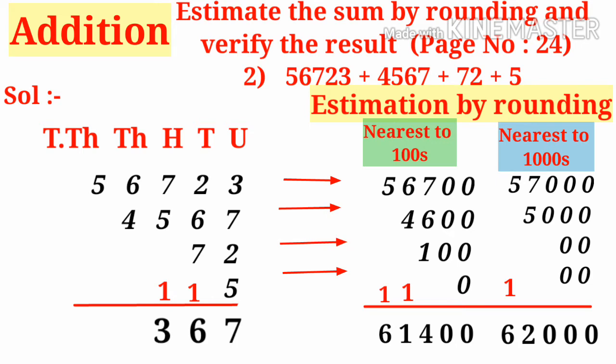Now doing the actual addition on the left-hand side: units place gives 17, tens place gives 16, hundreds place gives 13, thousands place gives 11, and ten-thousands place gives 5 plus 1 equals 6. The total is 61367, which is very near to the estimated value of 61400 rather than 62000. So estimation by rounding to the nearest hundreds place is more exact.